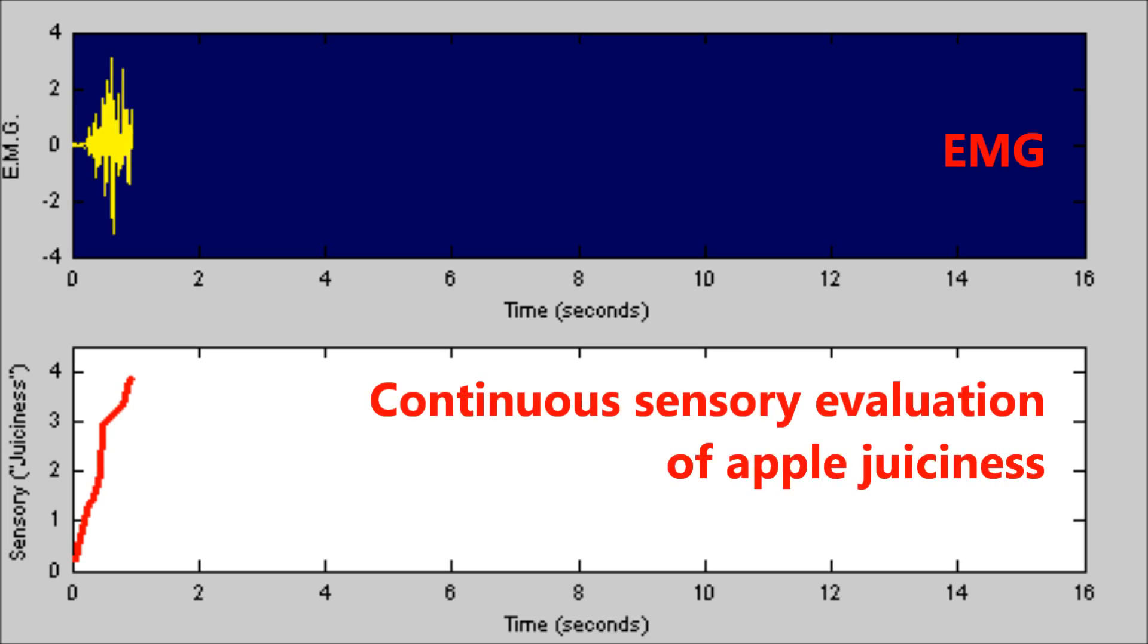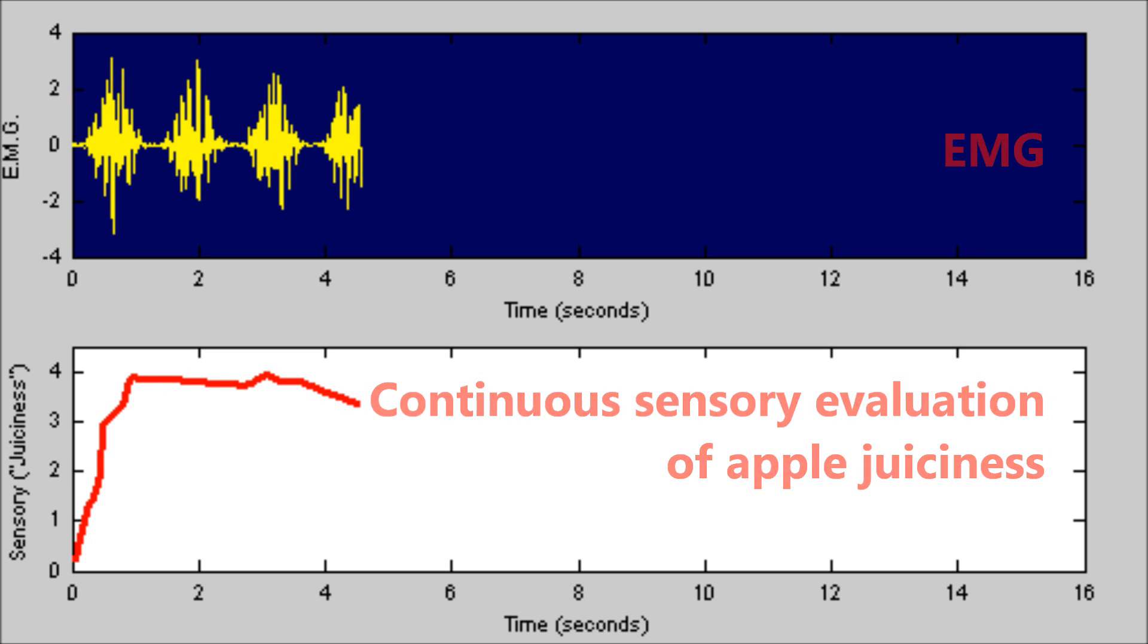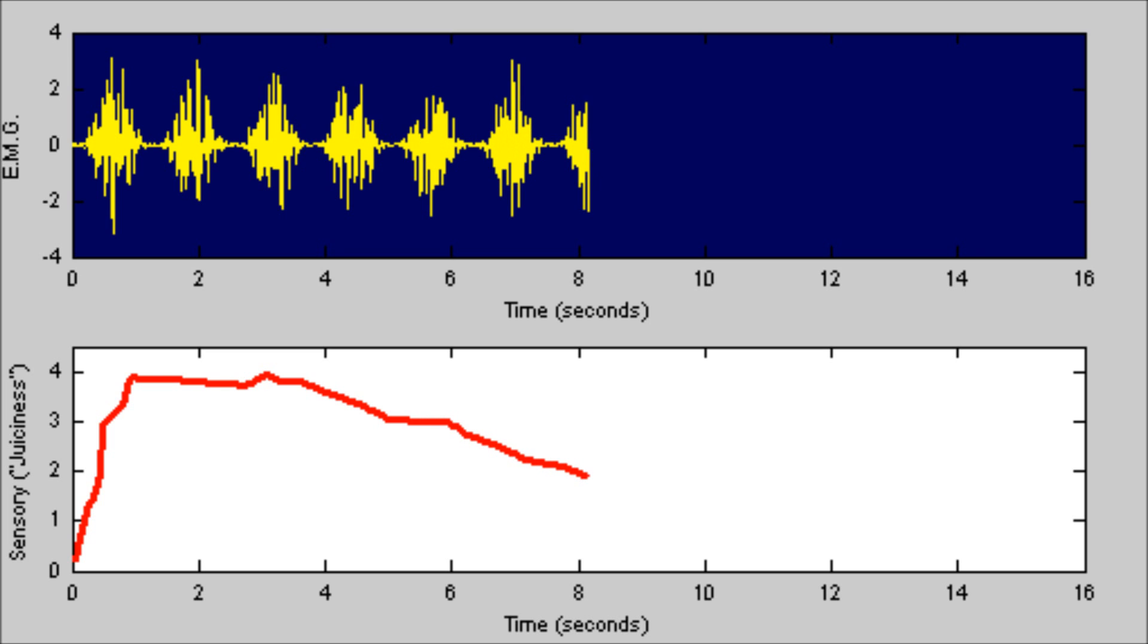Electromyograms can also be related to certain sensory terms such as mealiness or juiciness. By mapping EMG data onto time varying sensory evaluations, we aim to show that muscle activity plays a key role in the perception of texture.